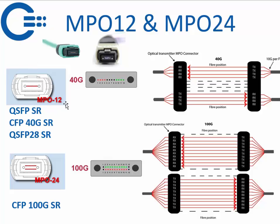The MPO 12 is used on the QSFP SR, the CFP 40G SR, and the QSFP28 SR — running at 4x25G which makes 100G. MPO 24 is less common in the industry; it's used for example with the CFP 100G SR and also the CPAK 100G SR.